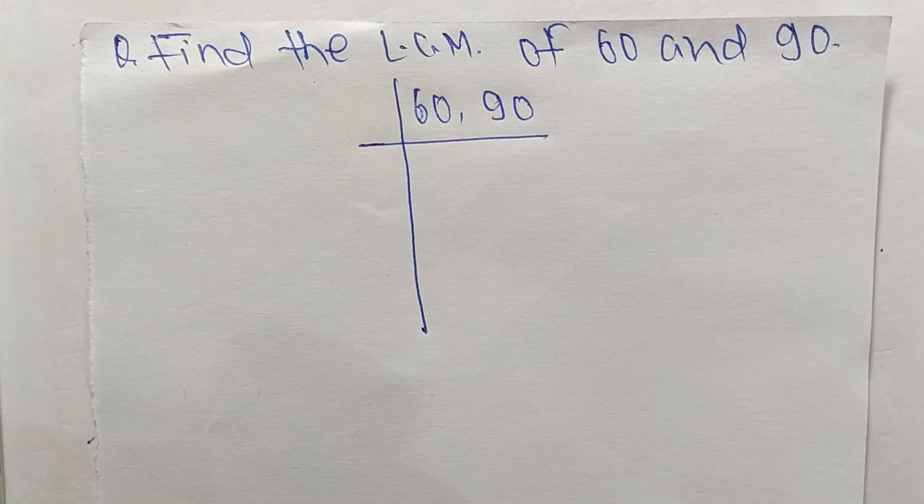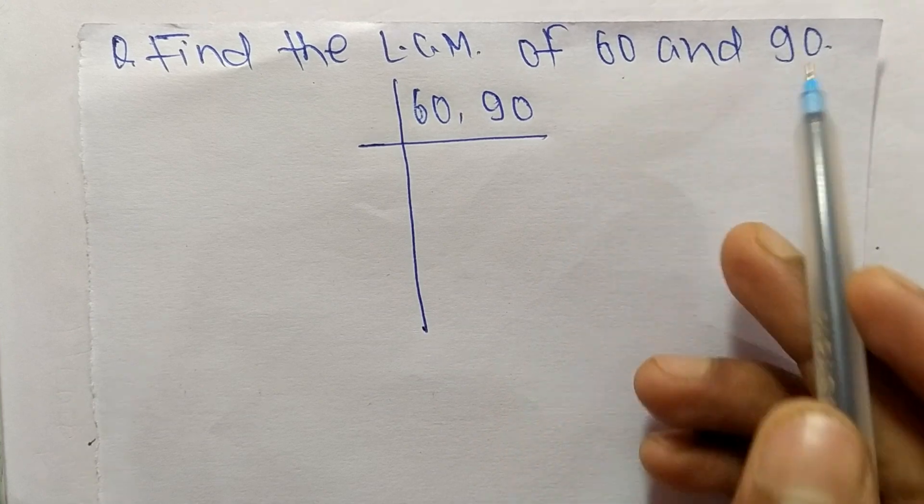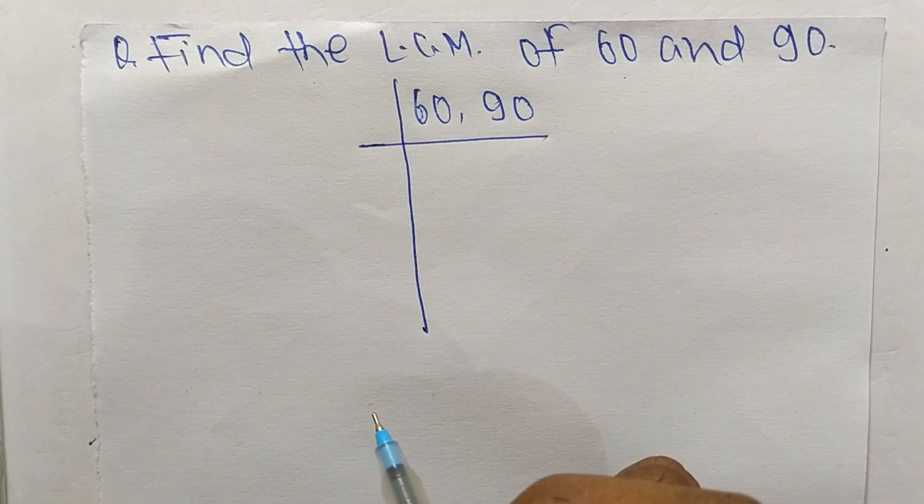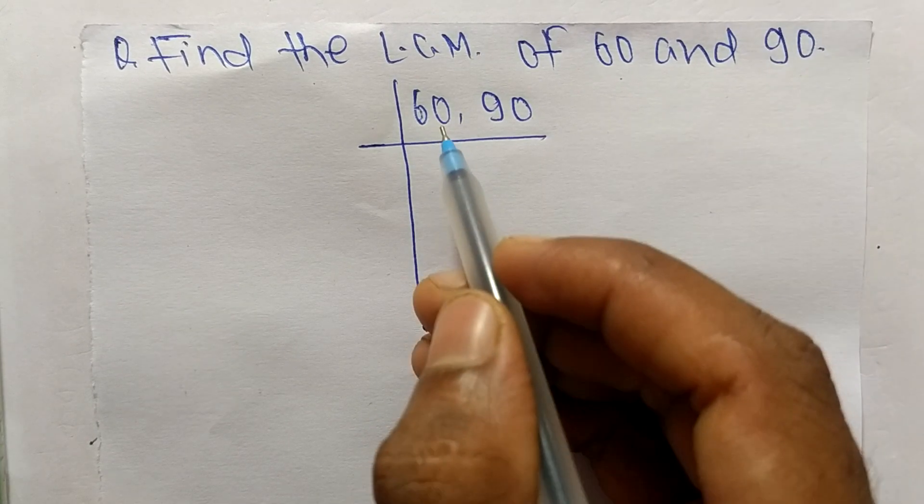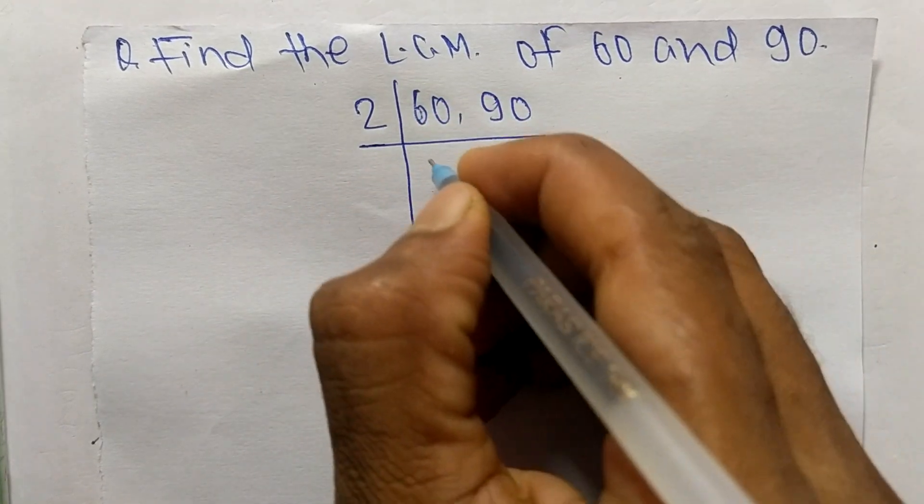So today in this video we shall learn to find the LCM of 60 and 90. To find LCM, first we choose the lowest number that can exactly divide 60 and 90, so the number is 2.